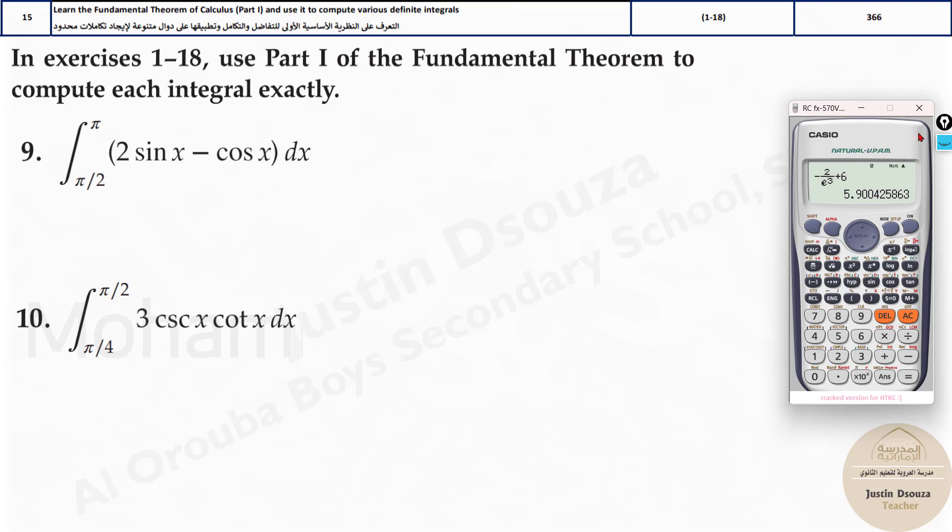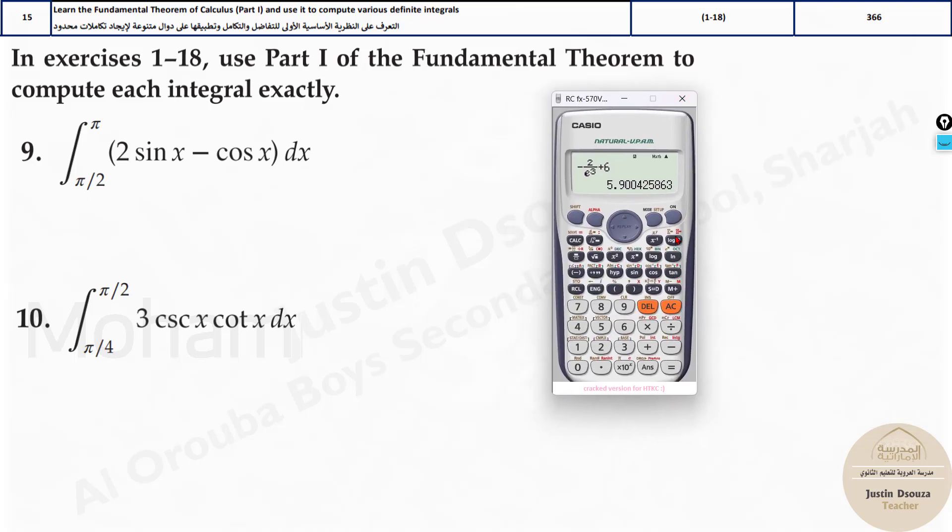Now coming to this trigonometric function. Remember if your calculator is not in the radian mode by pressing shift mode and 4 you won't be able to solve these. So please get them in the radian mode and now you can type it out as it is. This one is simple and straightforward. If you type it properly you will get the answer. No problem.